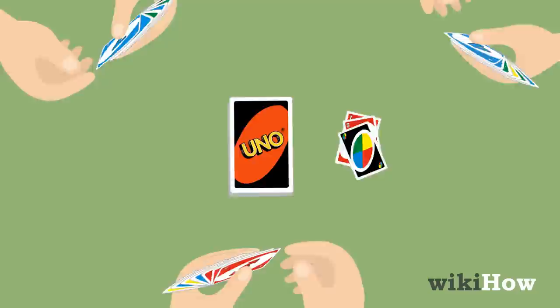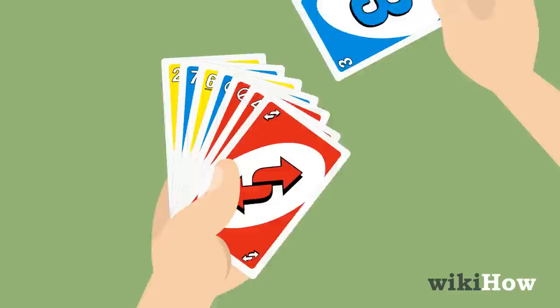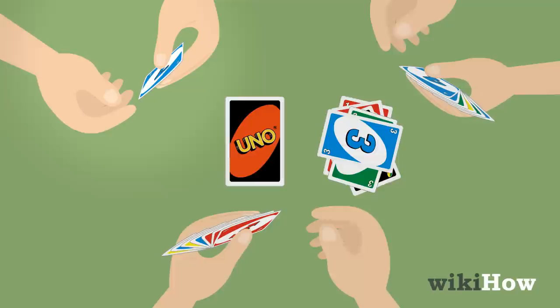If the player can't play any of their cards, they must draw a card from the draw pile. If the card drawn matches the color, number, or type of the card on top of the discard pile, they can play it. If not, the game moves on to the next player.